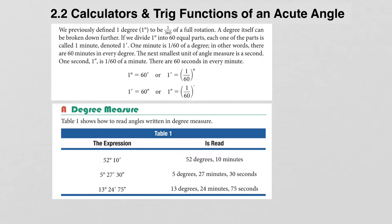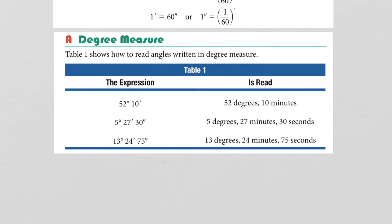How do we measure angles using minutes and seconds? Looking at this table, we see the expression 52 degrees and 10 minutes. In the next angle, we see 5 degrees, 27 minutes, and 30 seconds — and that is exactly how we read it. In the third angle, very similarly, we have 13 degrees, 24 minutes, and 75 seconds.